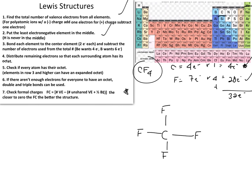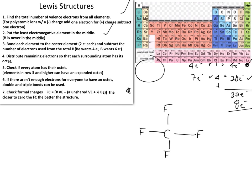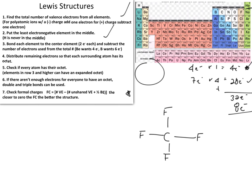Each bond represents two electrons. With four bonds, that's 4 × 2 = 8 electrons used. Keeping a tally on the right-hand side, we can see that we have 24 electrons remaining to be distributed.